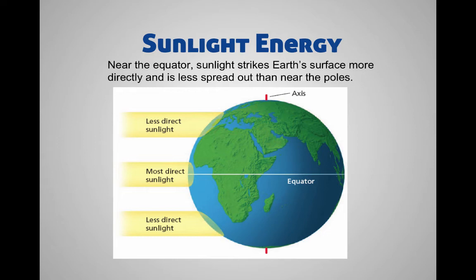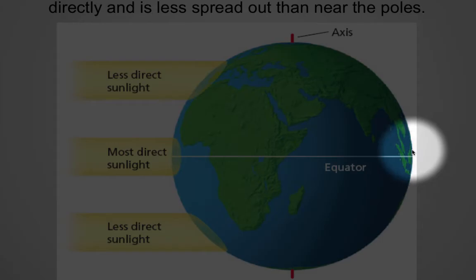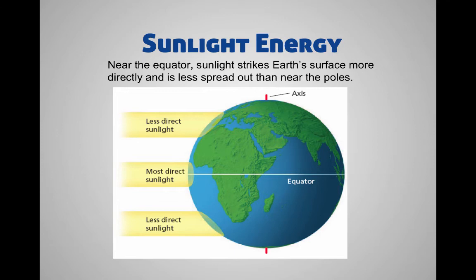If you look at this picture here, we see that at the equator, people who live there are getting the most direct sunlight — at a 90-degree angle, perpendicular to the surface of the Earth. So it's the most intense sun at the equator. When you look at a map and see where the equator is, that's where all the rainforests are: the African rainforest, the Congo, Malaysia, Indonesia, Southeast Asia, and the Amazon on the other side of the Earth — all right around the equator.